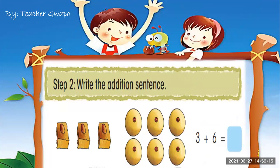Step number two, we will write the addition sentence. So three sweets plus six sweets is equals to blank. Three plus six is equals to blank.